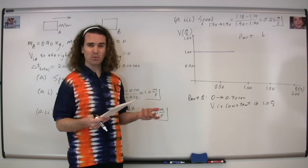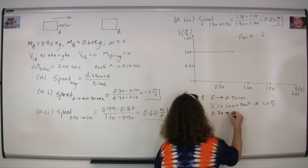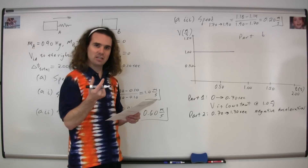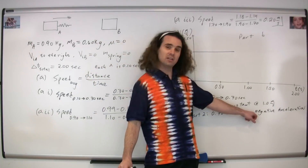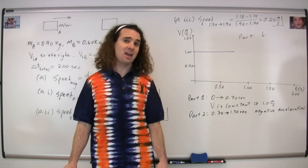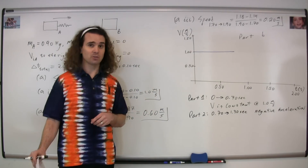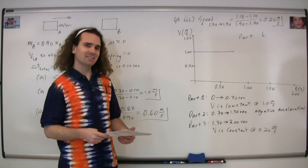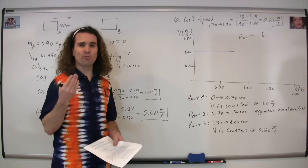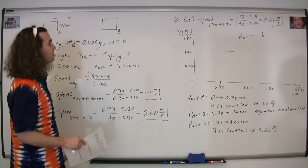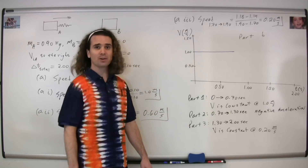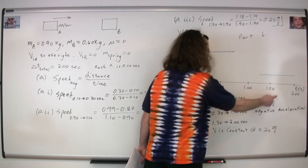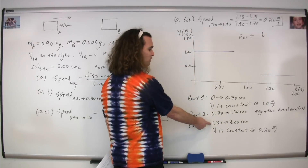Part two lasts from about 0.70 to 1.30 seconds. During this interval, the distance traveled each 0.10 seconds gets smaller, meaning the cart is slowing down with a negative acceleration. Part three lasts from about 1.30 to 2.00 seconds. During that time, the distance traveled each 0.10 seconds is the same again, so it's moving at constant velocity. We already found that constant velocity: it is 0.20 meters per second. We draw a horizontal line at 0.20 m/s from 1.30 to 2.00 seconds.